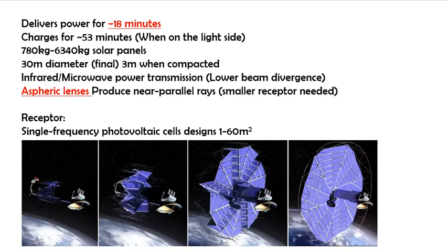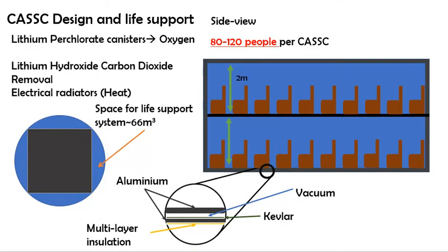Laser transmission through an aspheric lens will produce beam divergence and infrared microwave frequencies, designed to vary between 60m² to 1m² for power collection in place.